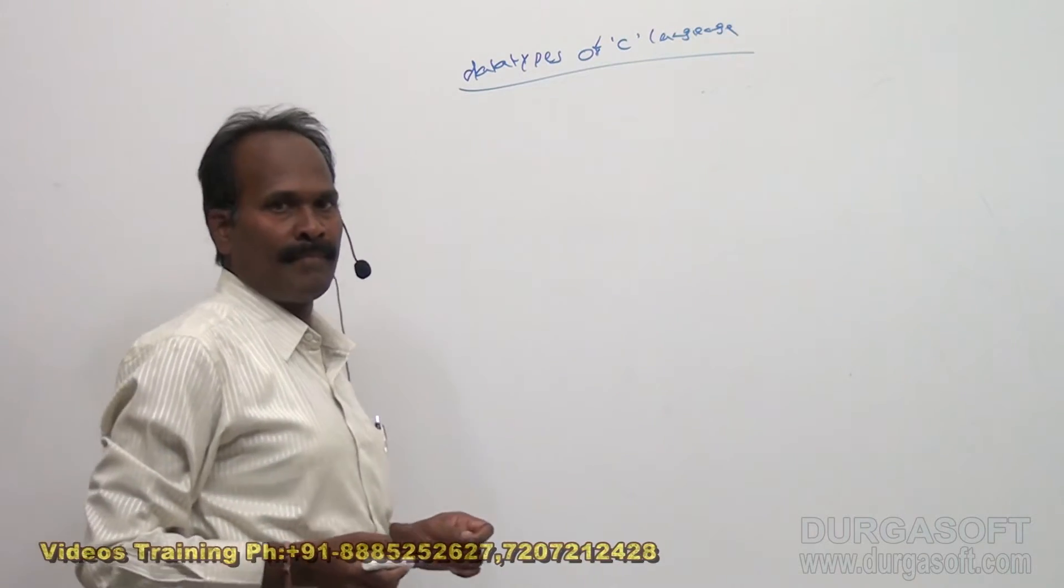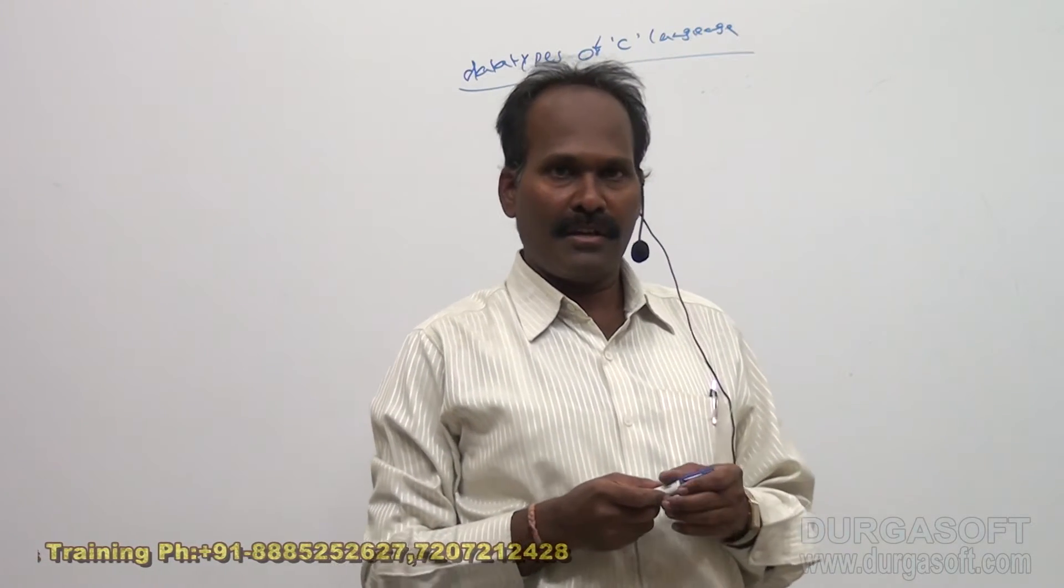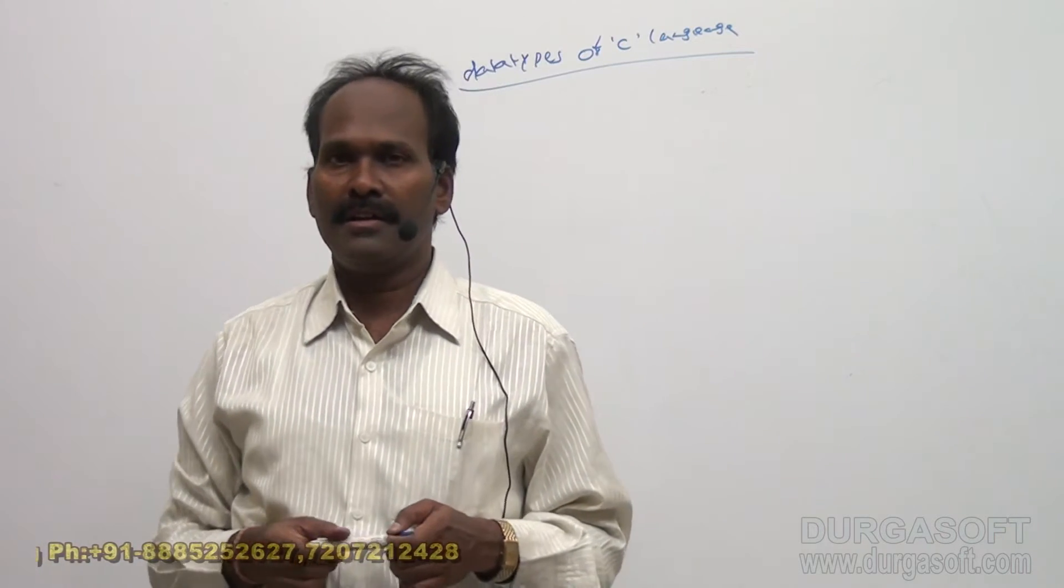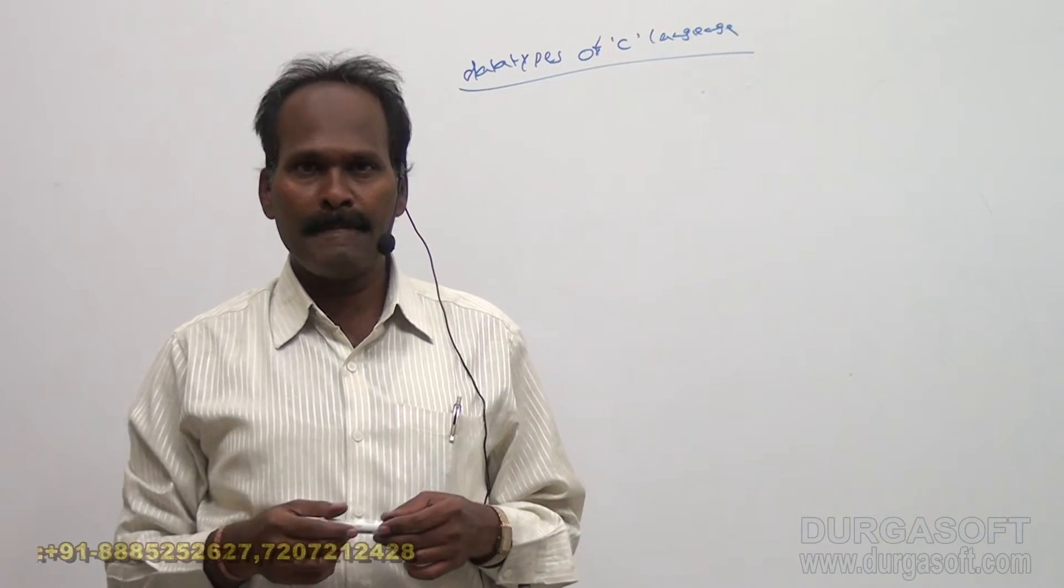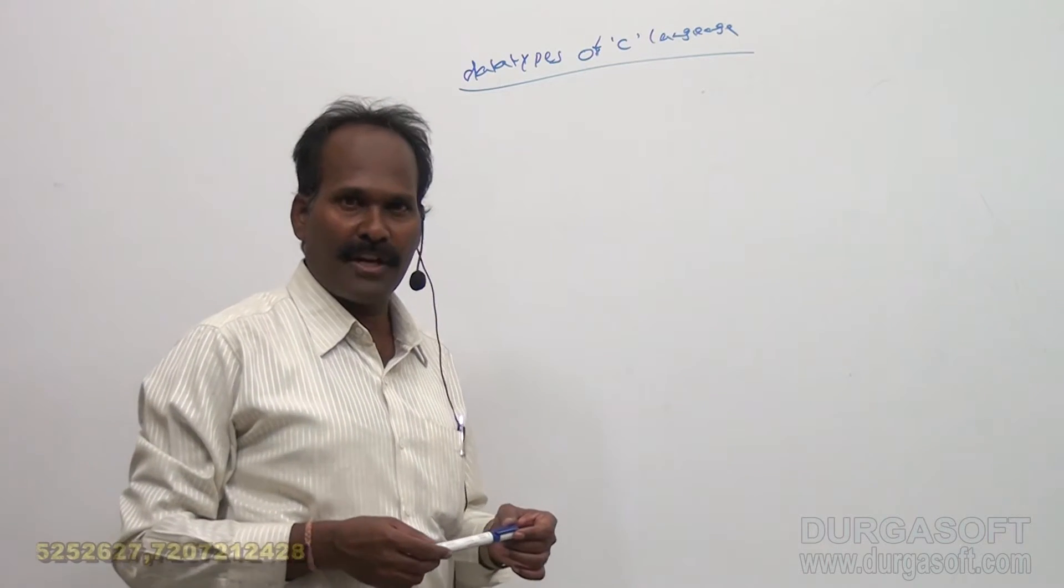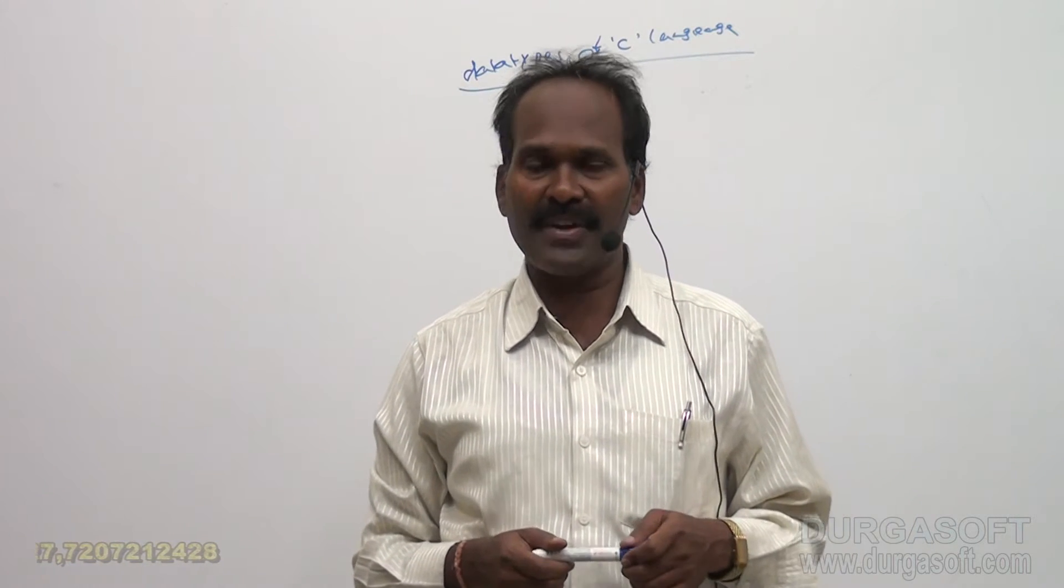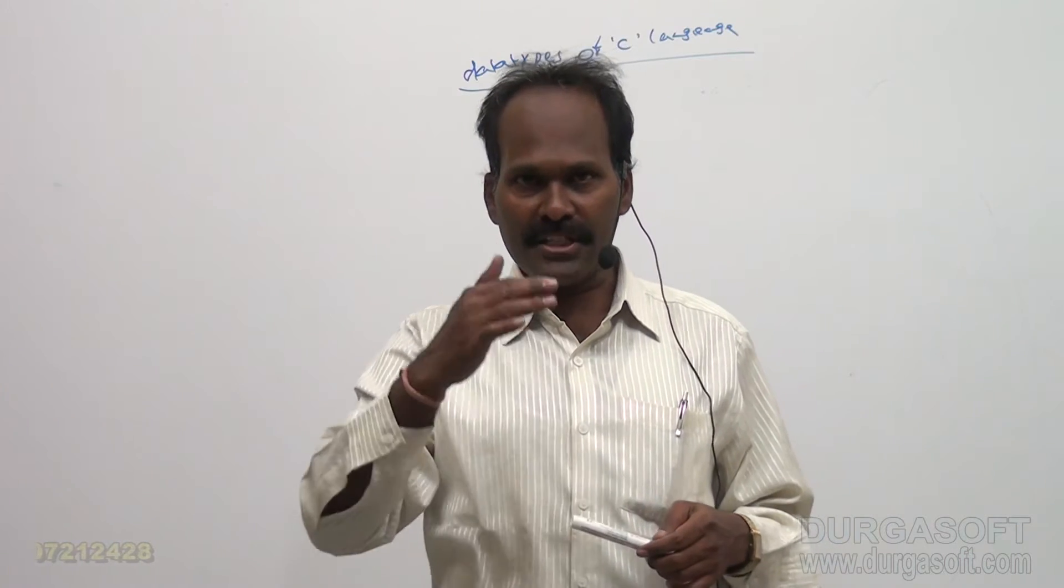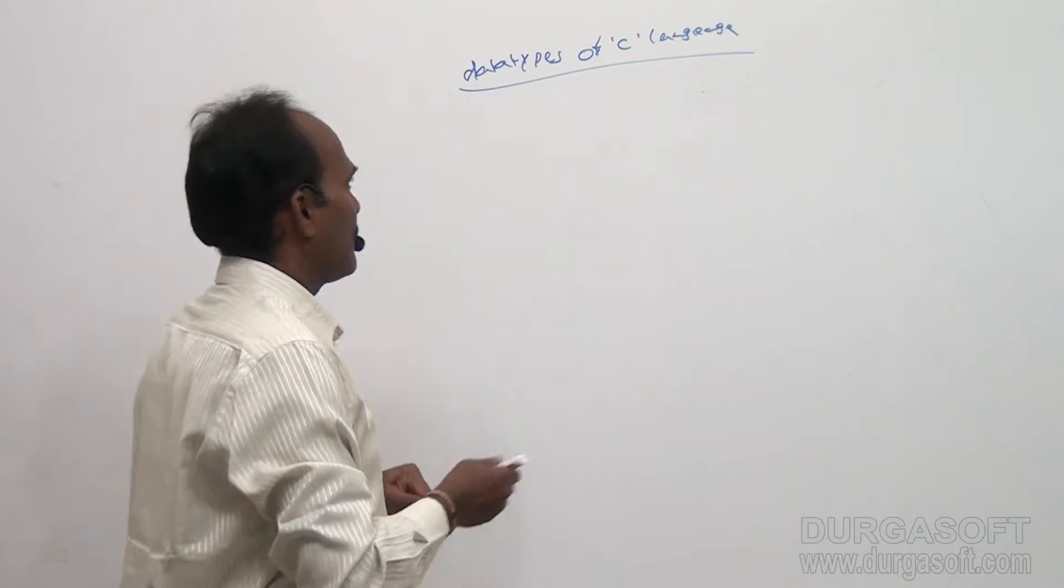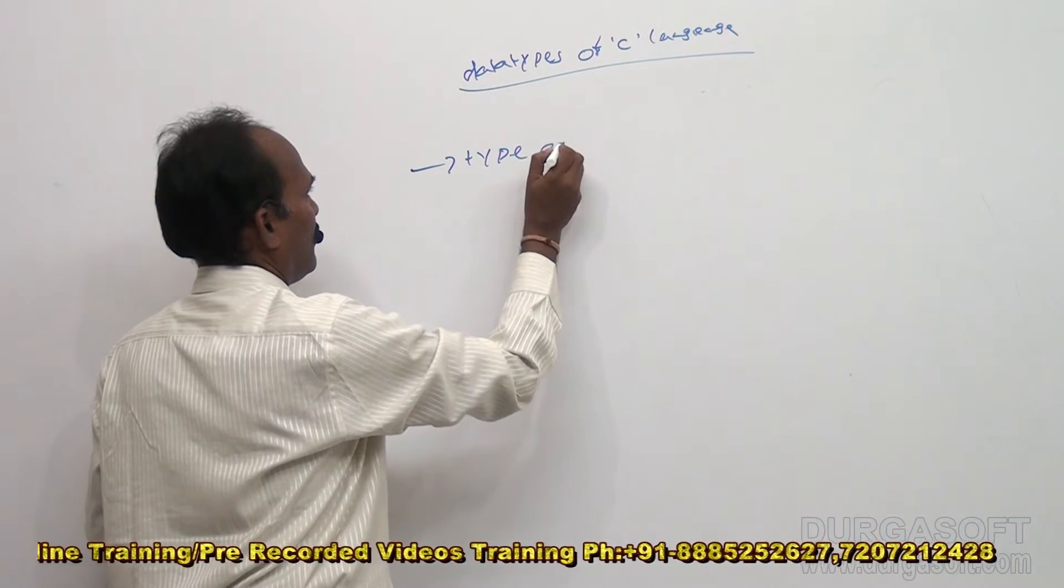Actually, what do you mean by data type? So data type is going to describe some properties like which kind of information that particular language supports, and the min and maximum values are supported by the type. So the amount of space required for the variable. Okay, so these three properties are described by data type. First one, the type of value the type of value, the type of value a language.